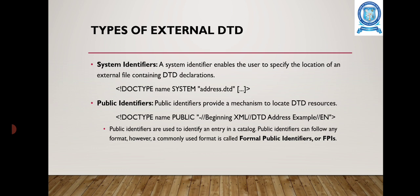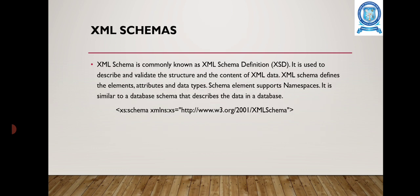Types of external DTD: the first is the system identifier, which enables the user to specify the location of an external file containing DTD declarations, using the format DOCTYPE name SYSTEM address.dtd. The second is the public identifier, which provides a mechanism to locate DTD resources using the syntax DOCTYPE name PUBLIC. Public identifiers are mainly used to identify an entry in a catalog, and a commonly used format is the Formal Public Identifier.